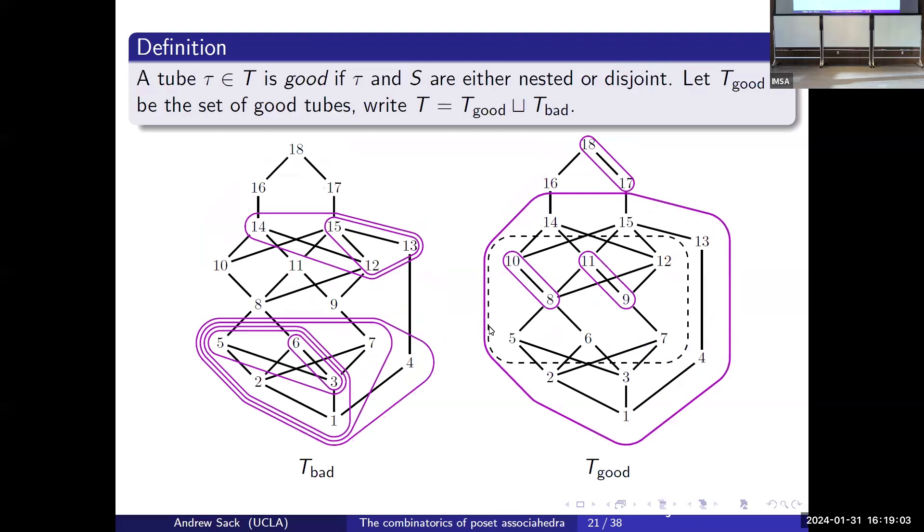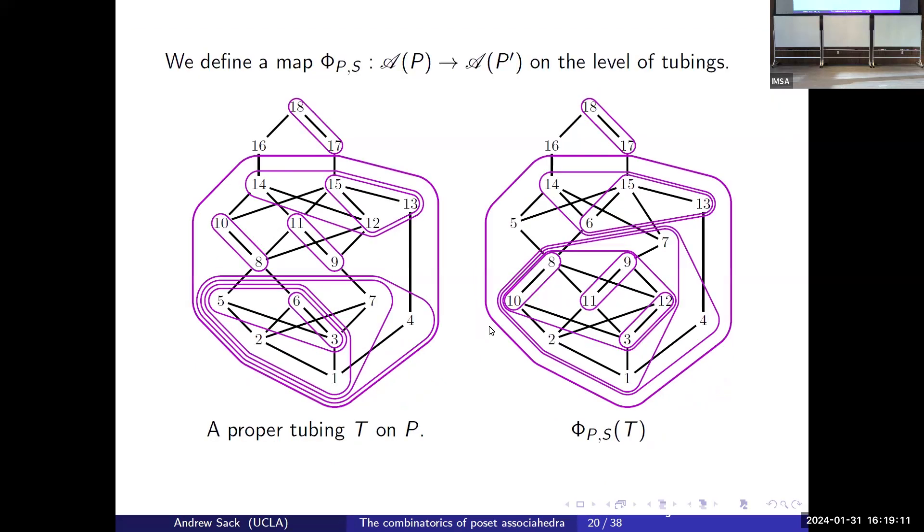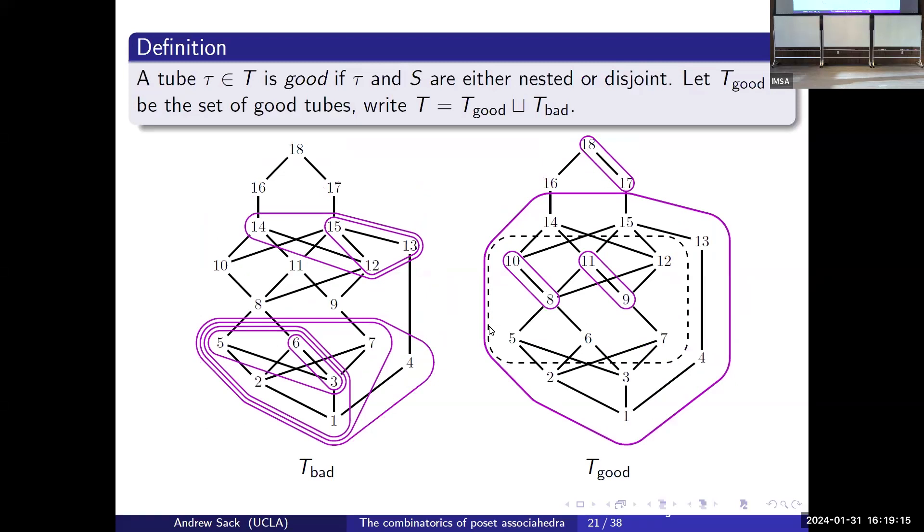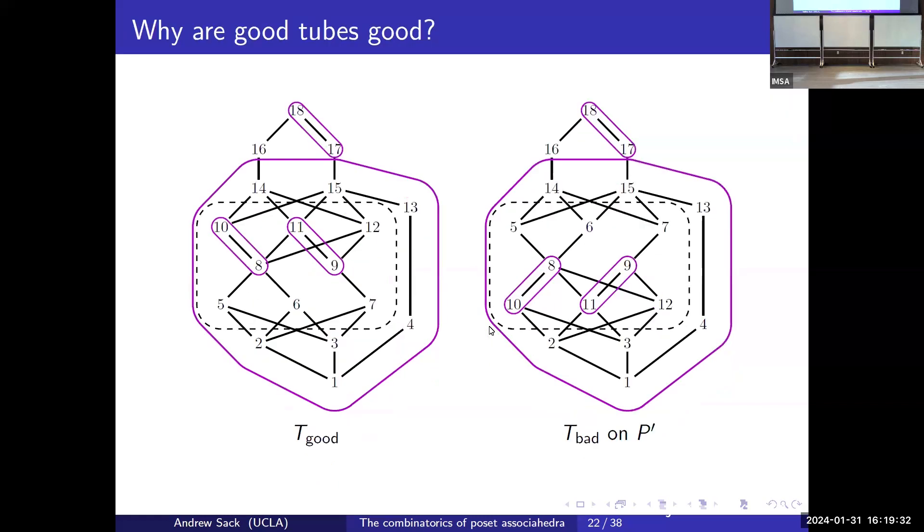Here's the map. Easy, right? No. Don't worry, we're going to take it step by step and we're really going to go through this. The first thing that we define are good tubes and bad tubes. The good tubes are the tubes that are either maximal or disjoint from S. Here we can see we split the tubes into the bad tubes and the good tubes.